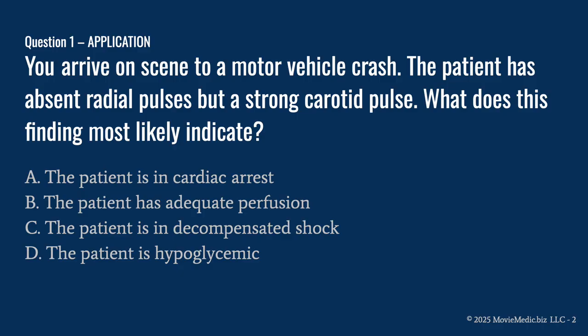Question 1. You arrive on scene to a motor vehicle crash. The patient has absent radial pulses but a strong carotid pulse. What does this finding most likely indicate? A. The patient is in cardiac arrest. B. The patient has adequate perfusion. C. The patient is in decompensated shock. Or D. The patient is hypoglycemic. Pause here if you need a second to answer the question, and then we'll get into the answer.